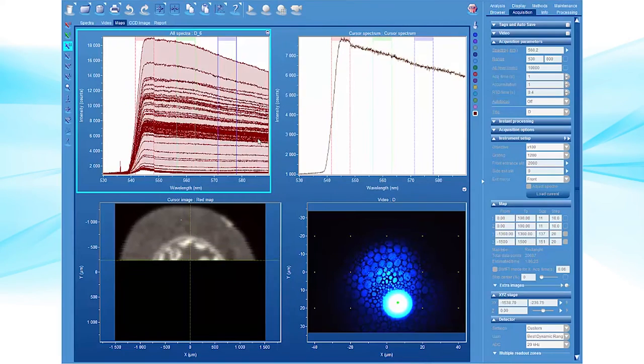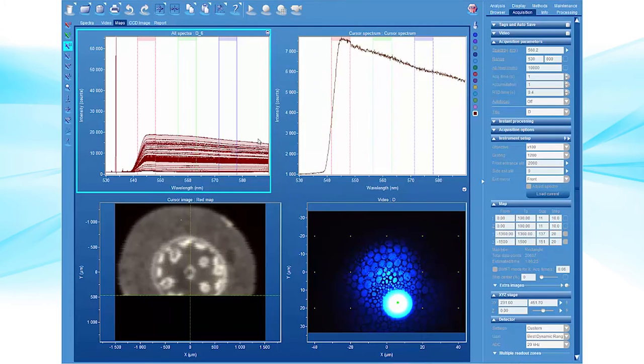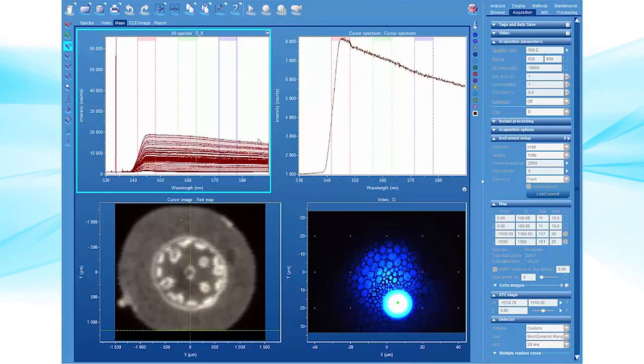For example, in semiconductor samples, steady-state photoluminescence can be used to determine the band gap of material and identify defects or impurities.